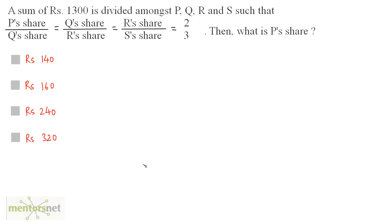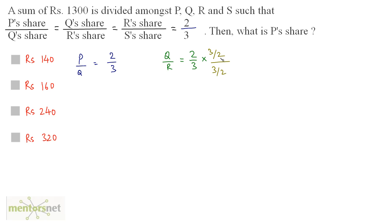A sum of 1300 rupees is divided amongst P, Q, R and S such that P's share by Q's share equals Q's share by R's share equals R's share by S's share equals 2 by 3. We have P by Q equals 2 by 3 and Q by R equals 2 by 3. To make Q's value consistent at 3, we multiply numerator and denominator by 3 by 2, so Q by R becomes 3 by 9 by 2. Q is fixed as 3 in both equations.